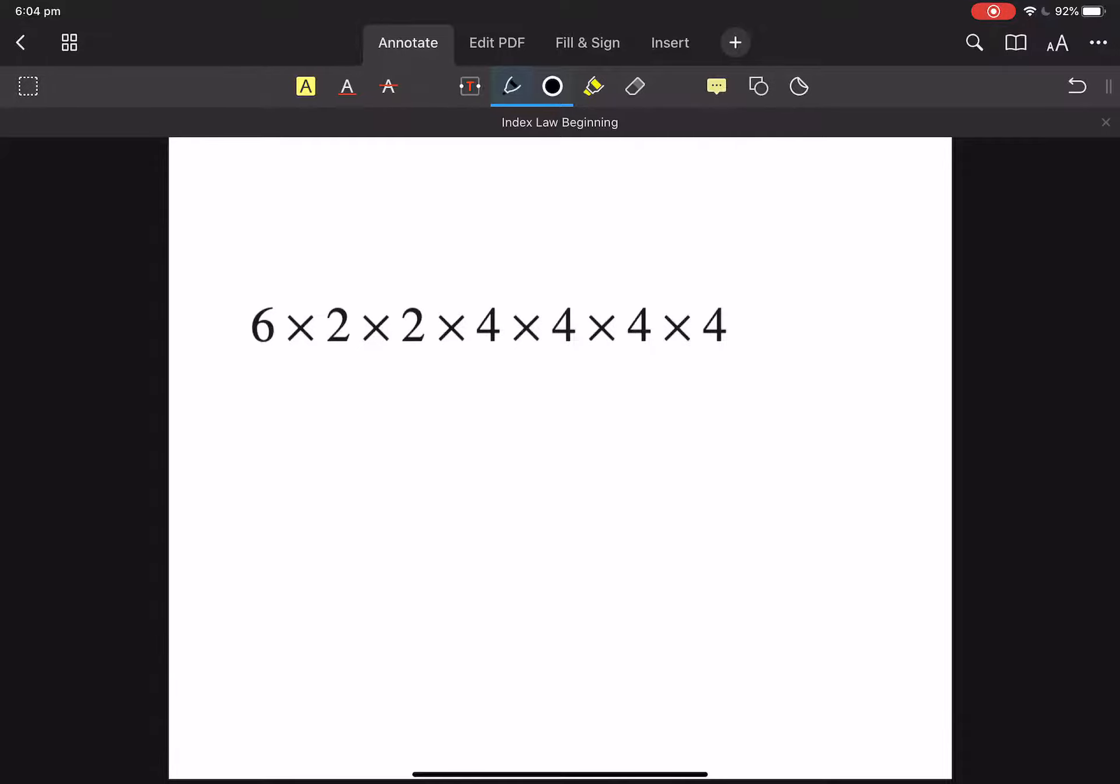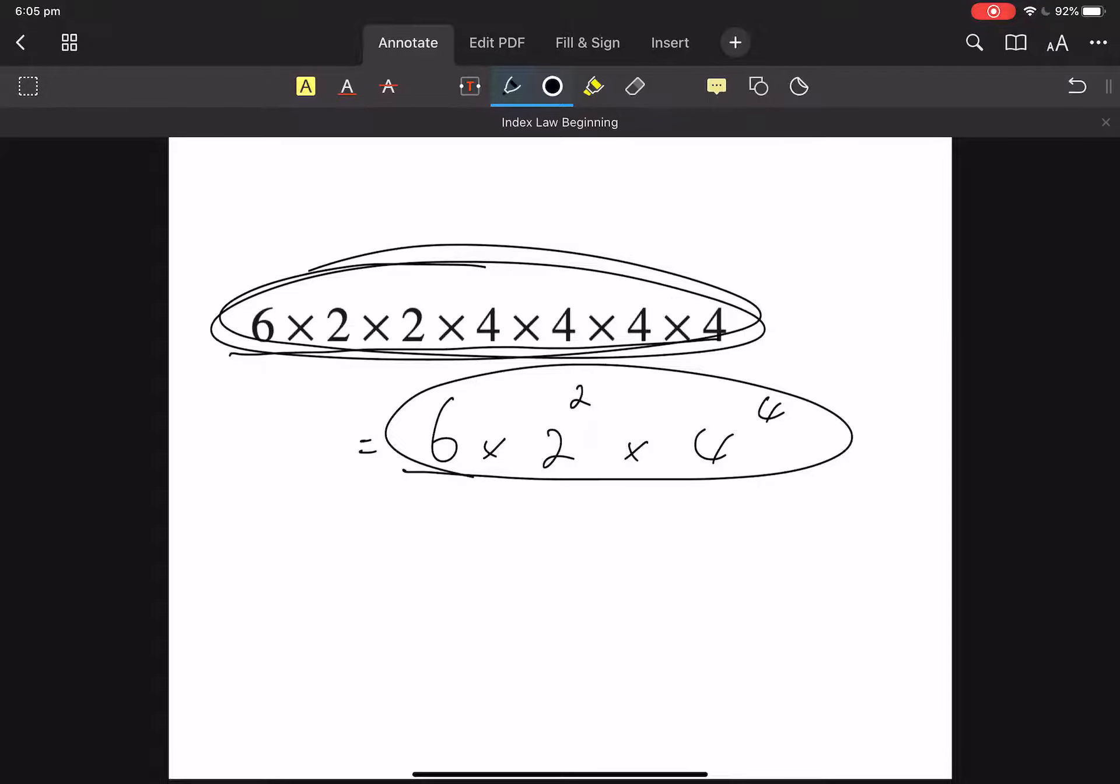We can also mix them up. So here we can say 6 times 2, how many 2s are there? There are 2 twos, so it's 2 squared. And times 4, how many 4s are there? There are 4 fours. So we can say that that is the same as that. This is expanded form, and our answer is in index form.